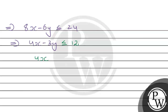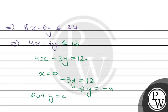So 4x minus 3y equals 12 represents a line. To find intercepts: putting x equal to 0 gives y equal to minus 4, and putting y equal to 0 gives 4x equal to 12, so x equal to 3. The line passes through points (3, 0) and (0, minus 4).